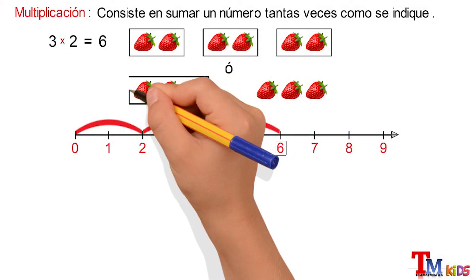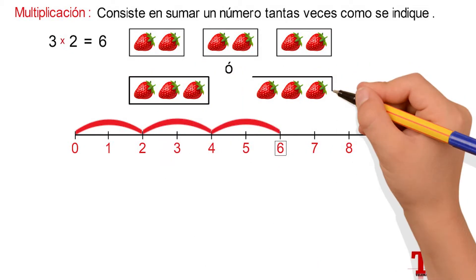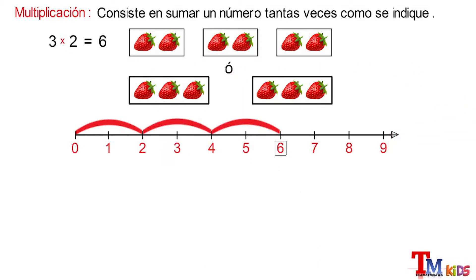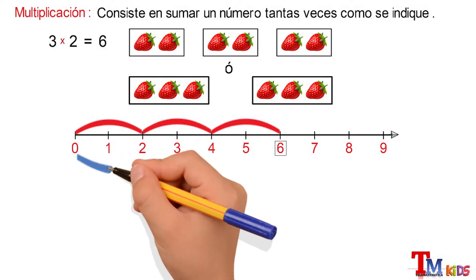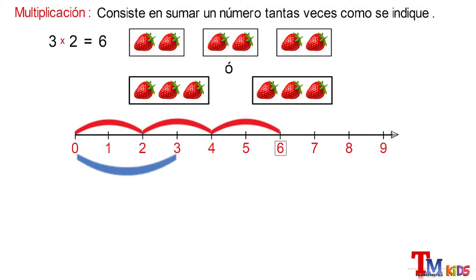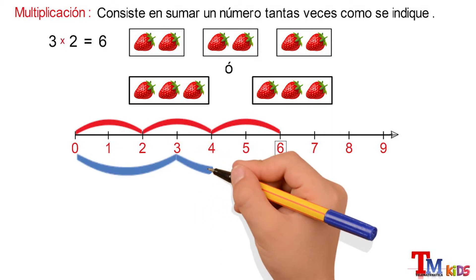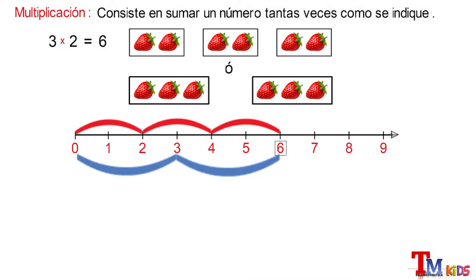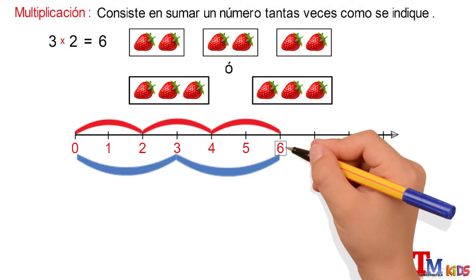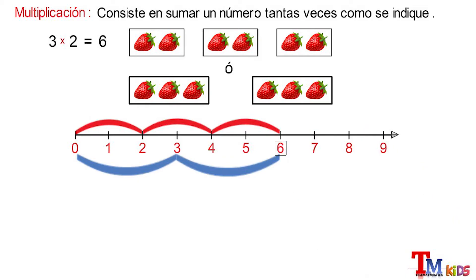And in second place, we will represent 2 times 3. In the same way, from 0 in the semicircle, we give a first jump of 3 units and a second jump of 3 units, and we also reach the value 6.